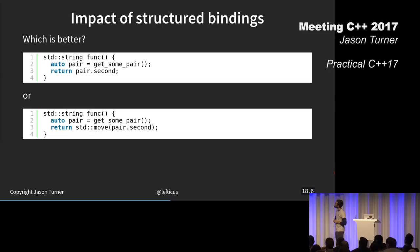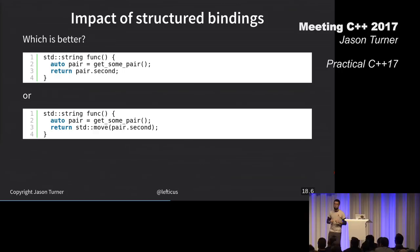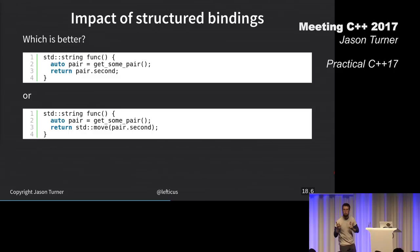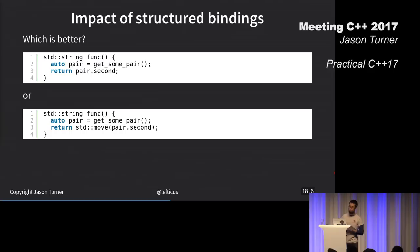We've established that we want the compiler to do its job. We want it to optimize the return value. We don't want to call standard move unless we have a reason to. Then this raises this question of which of these two choices is better? The second one. Why?